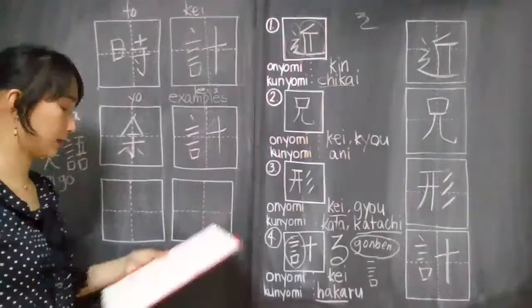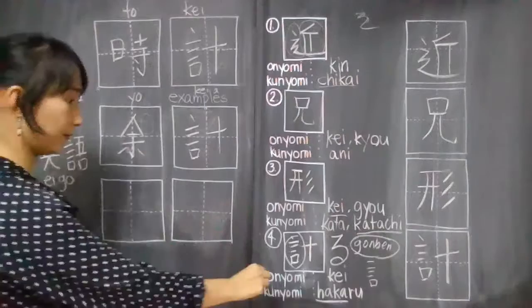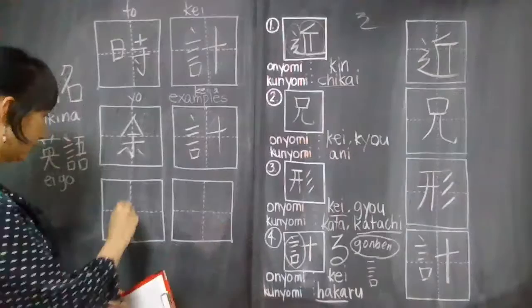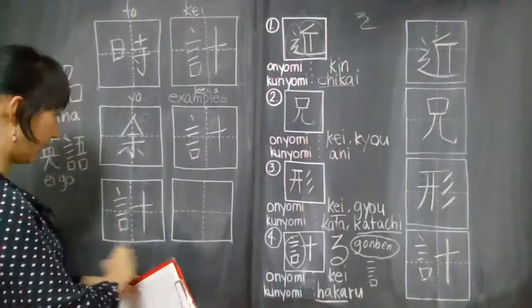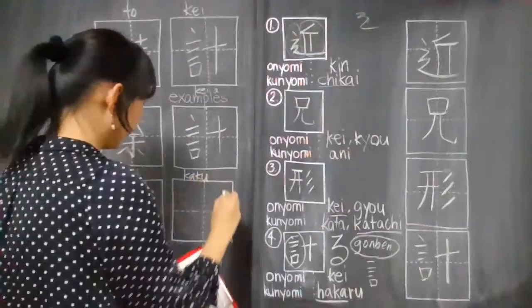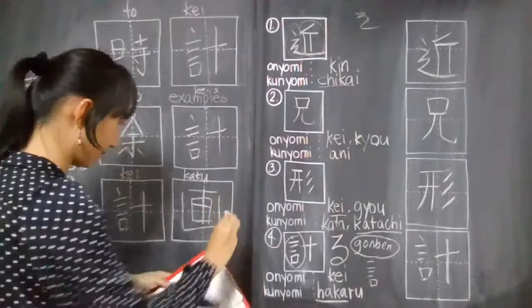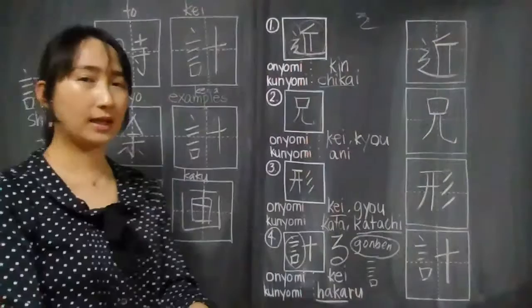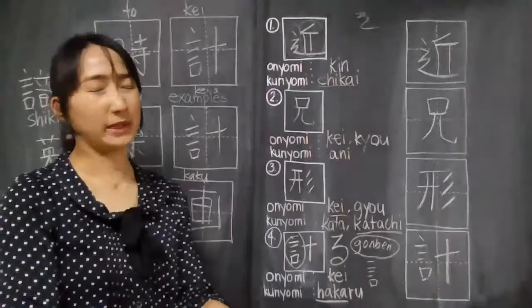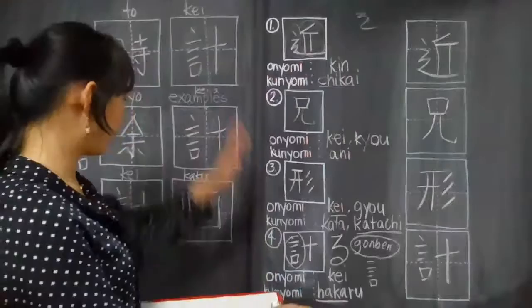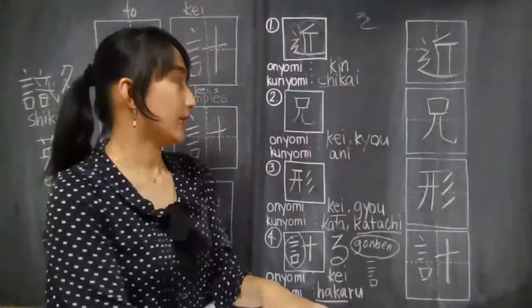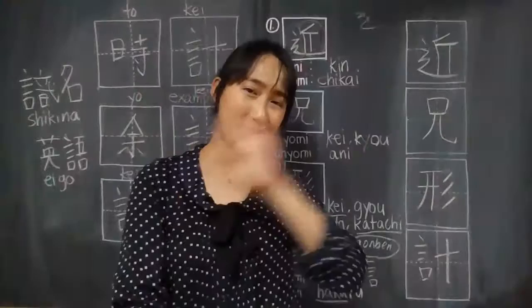The last example that I have for you for this kanji is the word keikaku. This is already ke, kaku. Plan or project, keikaku. Keikaku ga arimasu ka? Do you have any plans? I don't have any as of now. So guys, that is how we use keikaku in a sentence. We are done with our kanji lesson for today and I hope you are learning a lot from my kanji lesson. So see you next time, goodbye, thank you.